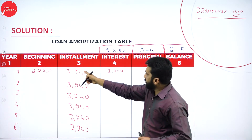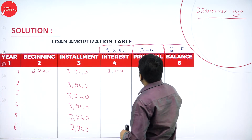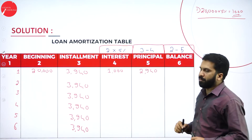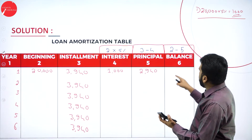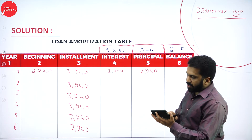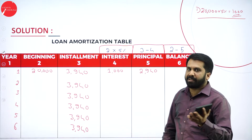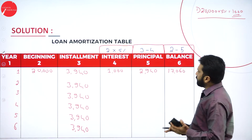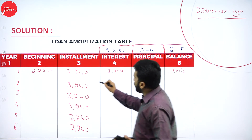Column 3 minus column 4: the installment is 3,940 and the interest is 1,000, so 3,940 minus 1,000 gives a principal of 2,940. For the balance column: 20,000 minus 2,940 gives 17,060. Year 1 is now completed.